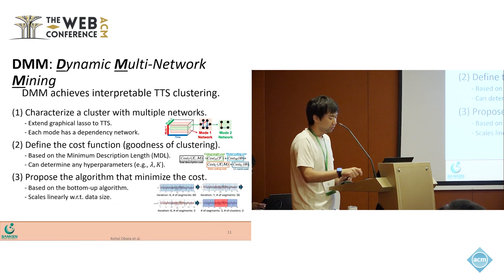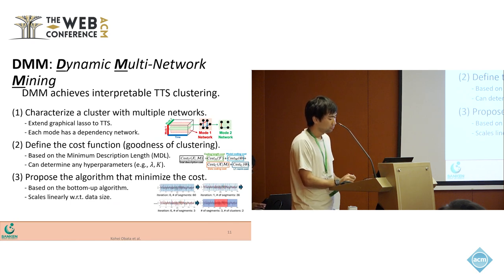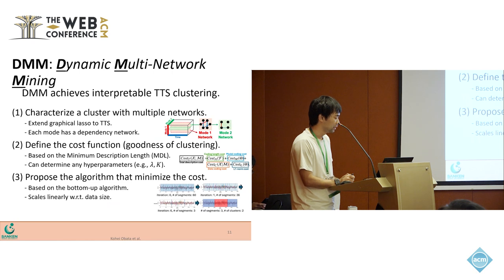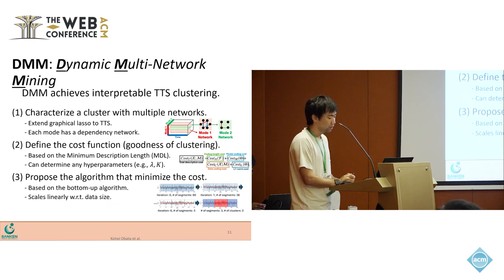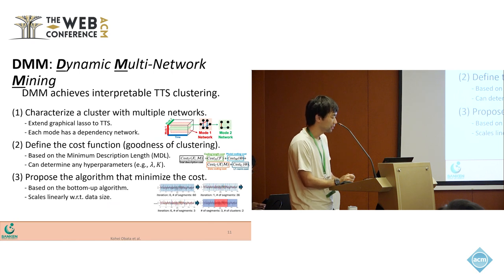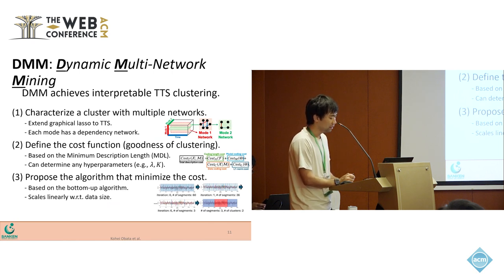In this model, each mode has a dependency network. Then we define the cost function based on the minimum description length. By minimizing this cost function, it can determine any hyperparameters, including the number of clusters.